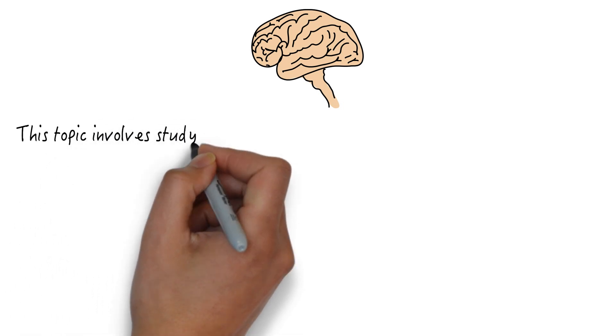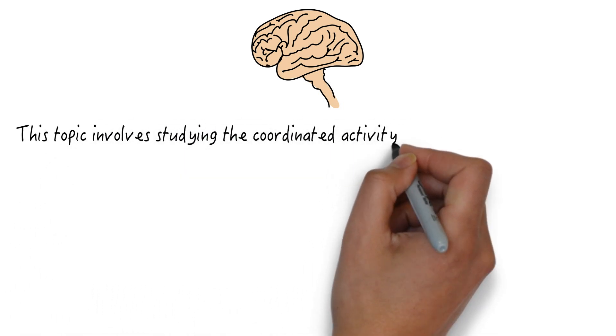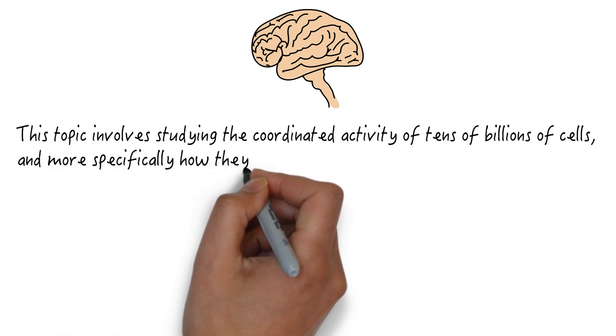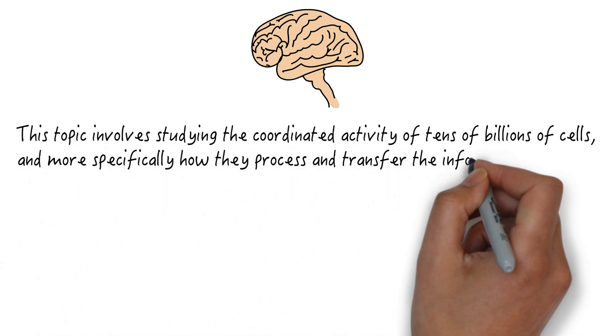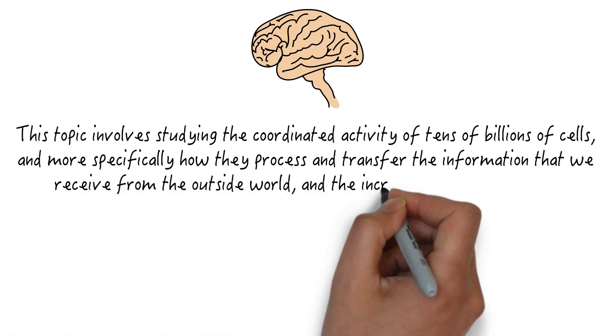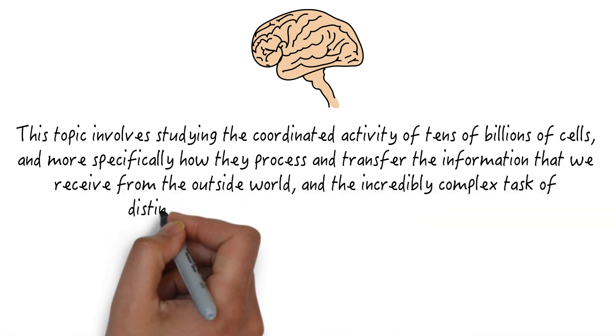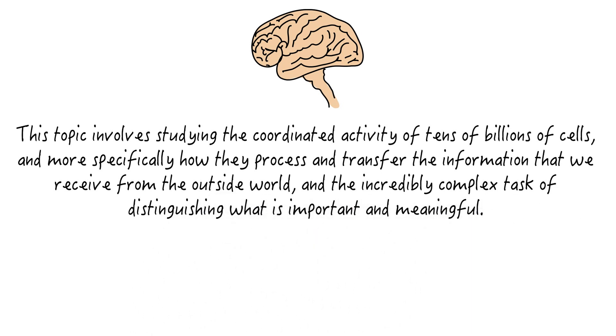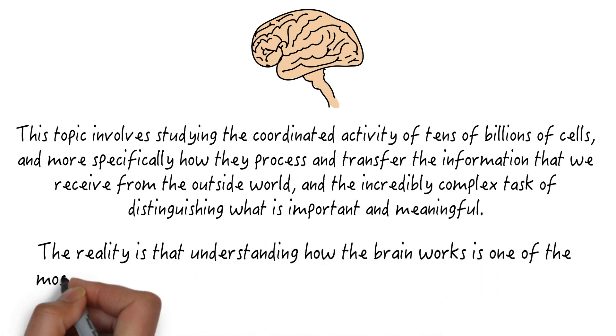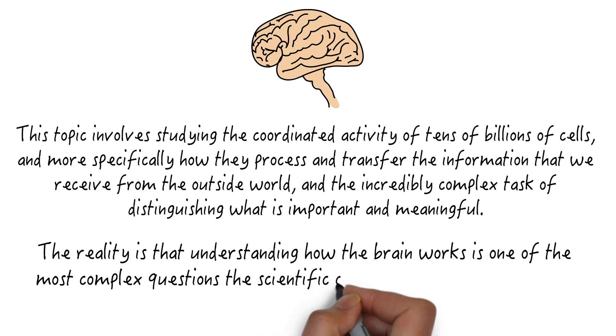This topic involves studying the coordinated activity of tens of billions of cells, and more specifically how they process and transfer the information that we receive from the outside world, and the incredibly complex task of distinguishing what is important and meaningful. But the reality is that understanding how the brain works is one of the most complex questions the scientific community has yet to answer.